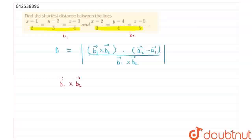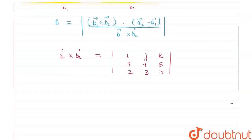So let's find out b1 cross b2 that would be i j k, 3 4 5, 2 3 4. By solving this we will get our b1 cross b2 is equal to minus i plus 2 j minus k.